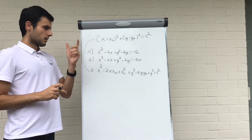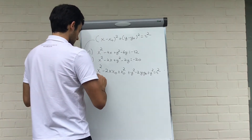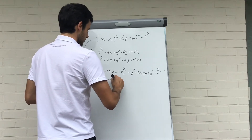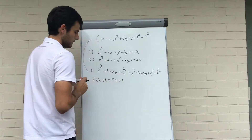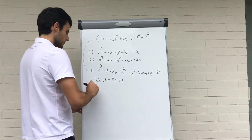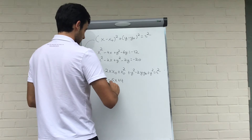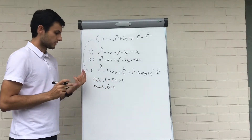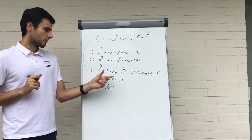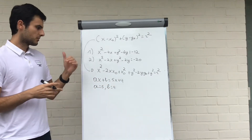Why do we do that? Well, suppose we have ax plus b equals 5x plus 4, and I ask you to find a and b. You say a is 5 and b is 4, because a is the only term with x, and 5x is the only term with x; b is the only number and 4 is the only number, so they must be equal. It's the same principle here.